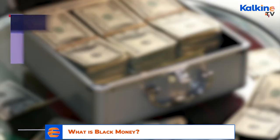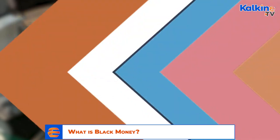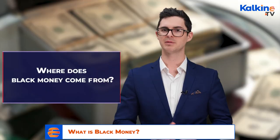Consider the case of a property buyer who pays $500,000 for a piece of land. If the buyer declares $100,000 to the government and pays $400,000 under the table, the deal is worth $400,000 in black money. In both cases, the sellers made money from legitimate sources but avoided paying taxes.